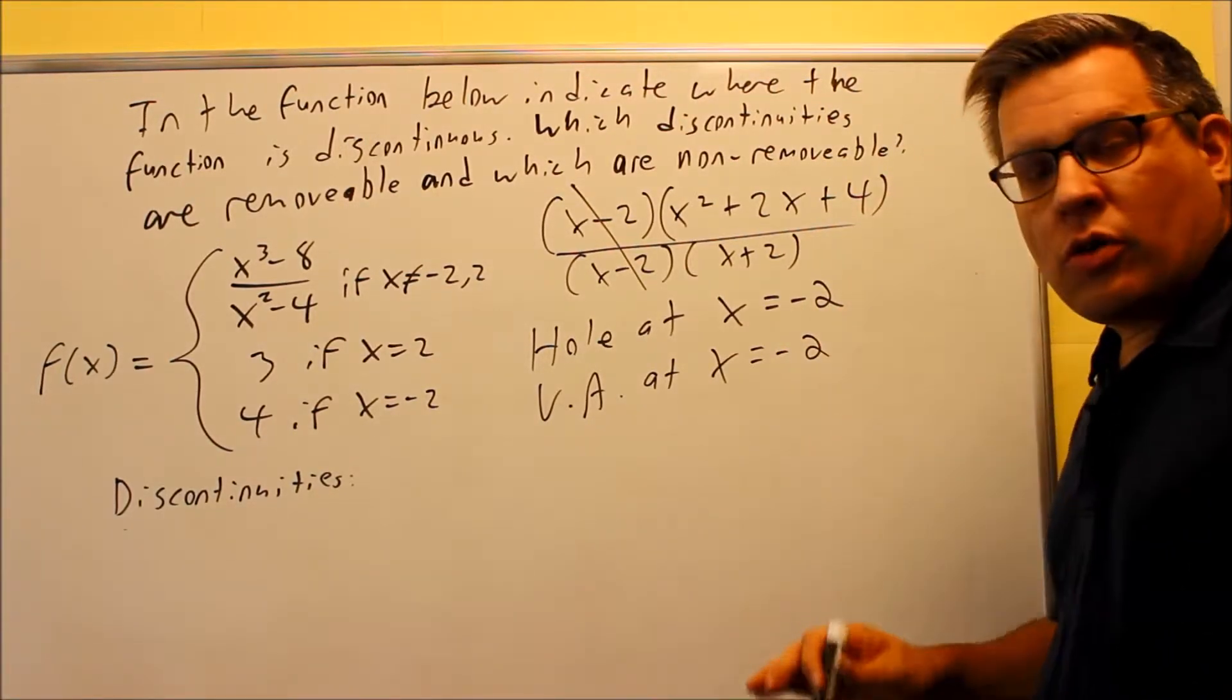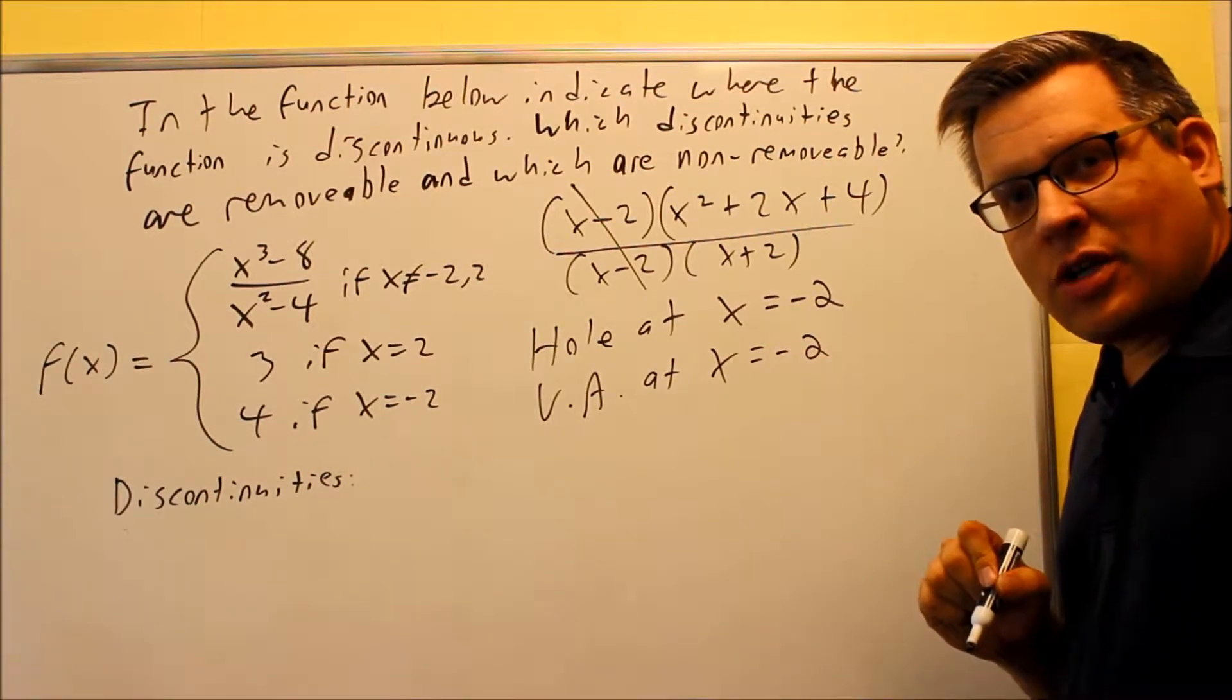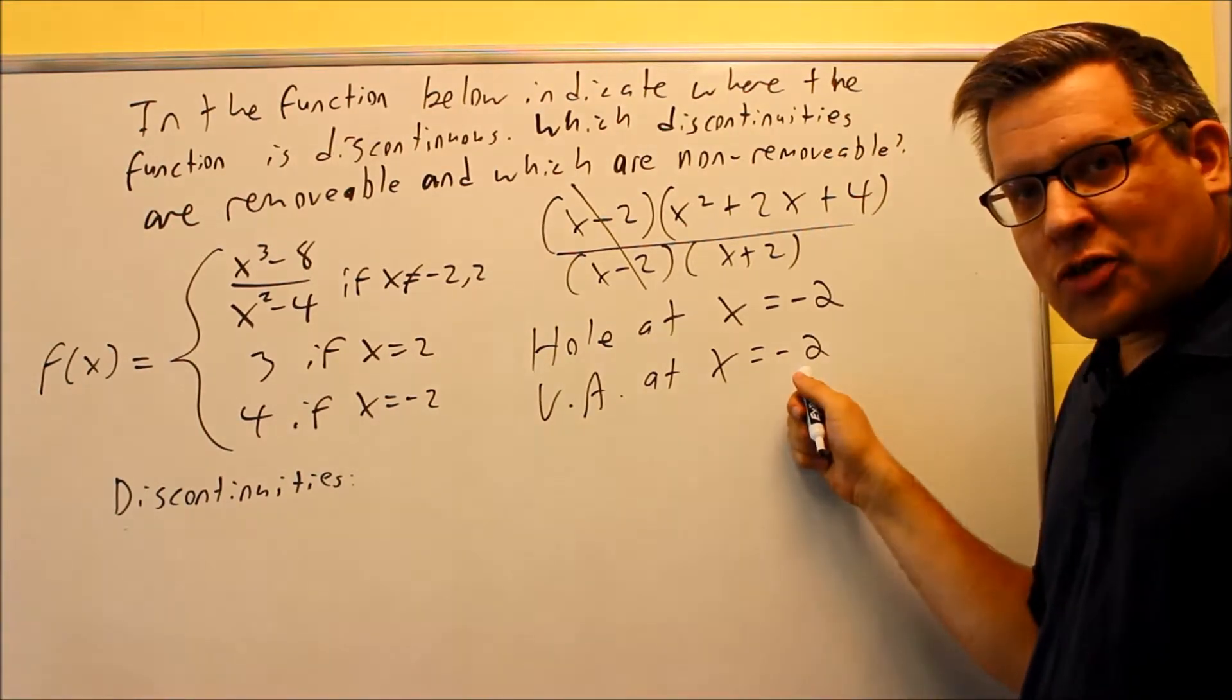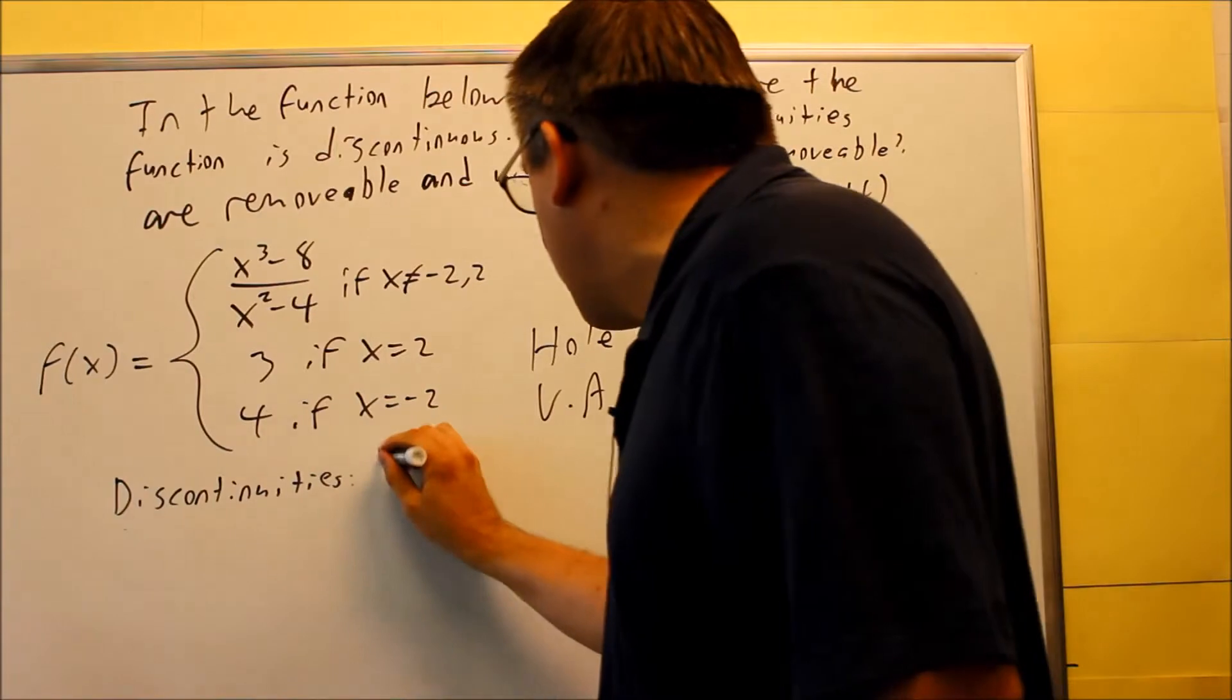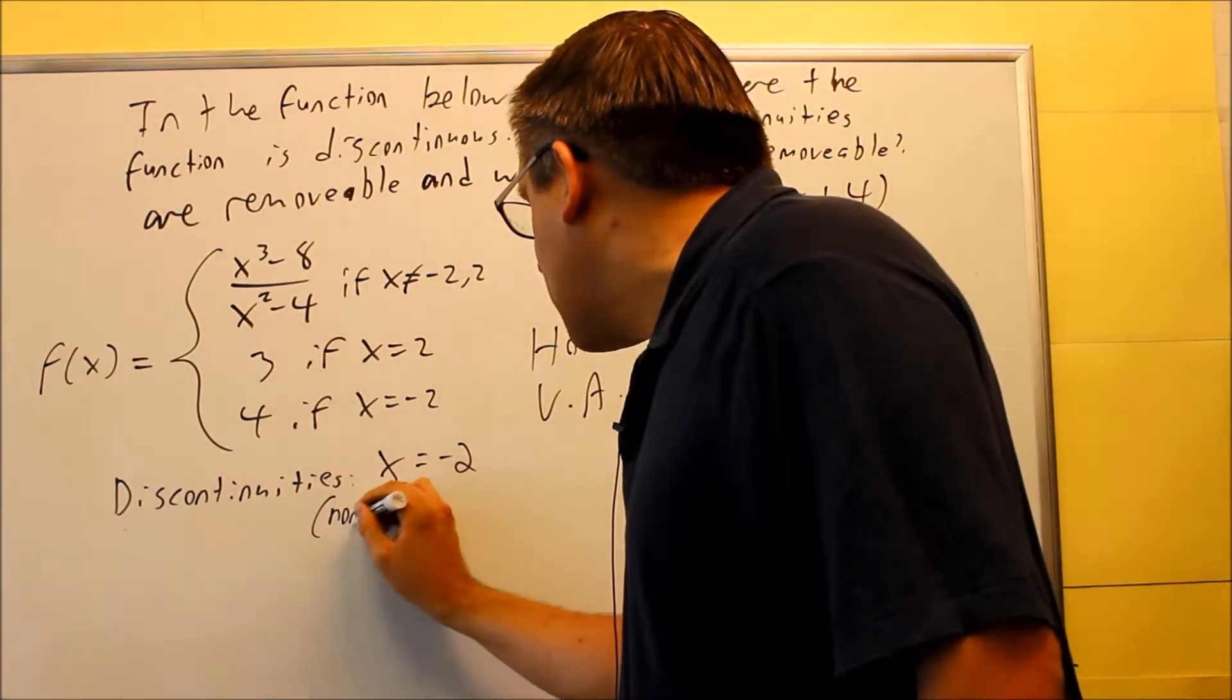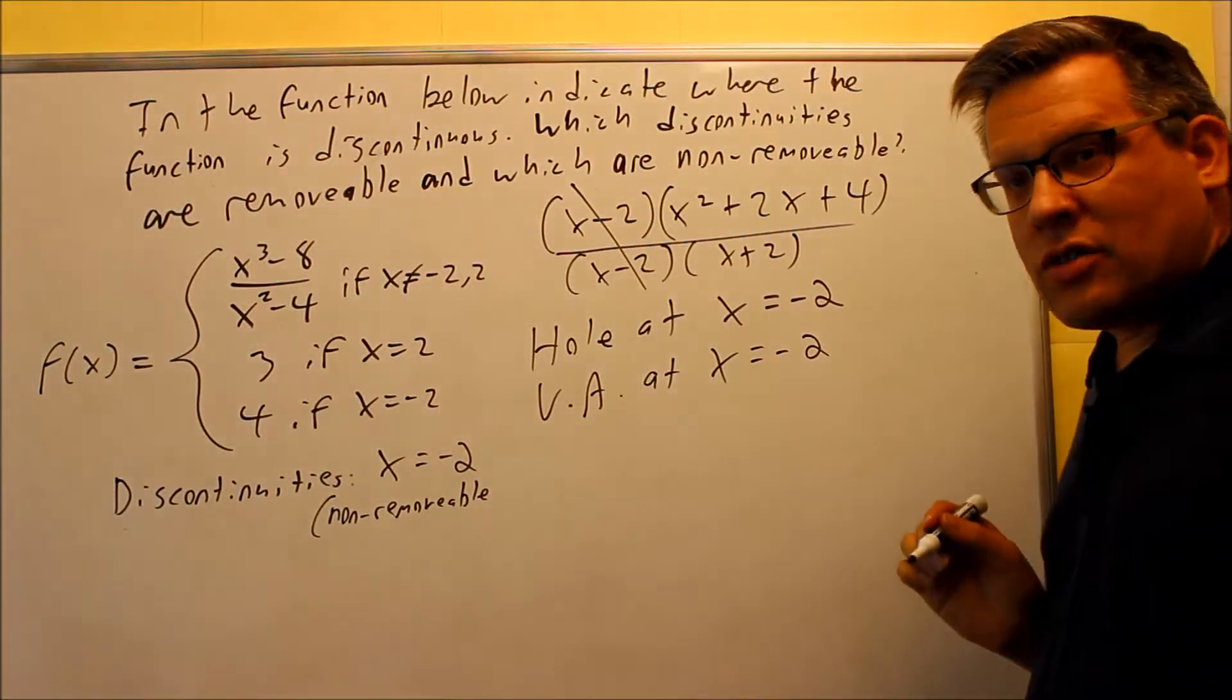Now what I know about removable and non-removable discontinuities, if I have a vertical asymptote, definitely that's going to be one where no matter what, if I assign a point to it, I have a point right here at 4, but that's not going to make a difference because I have a vertical asymptote there. So therefore, discontinuities, I know for sure I'll have one at x is equal to negative 2, and this one right here is going to be considered non-removable discontinuity. Because again, it's a vertical asymptote.